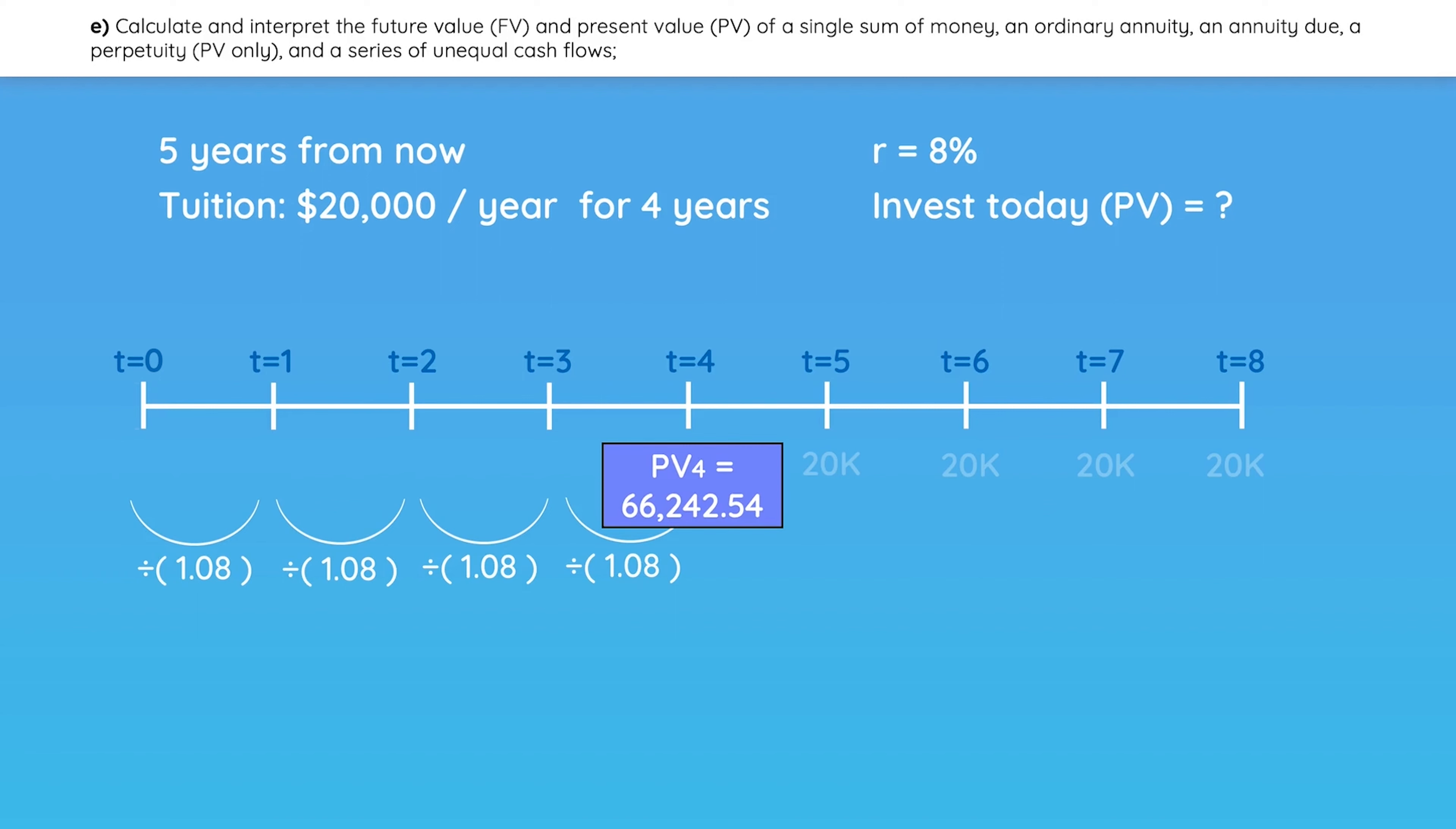If you prefer, you can use your calculator again to bring the amount back from year 4 to year 0. Here are the keystrokes. Regardless of which method you use, this is your present value at time 0. That's how much you need to invest today, so that you can cover your child's college tuition in the future.